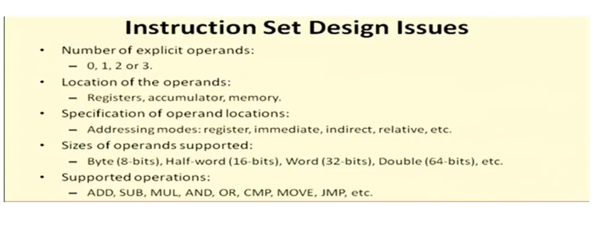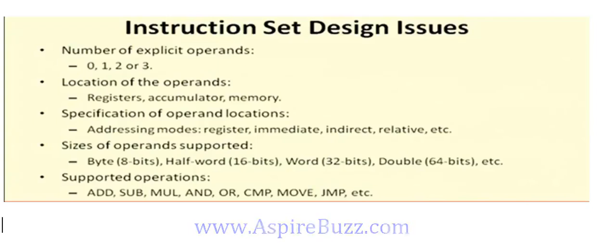The specification of the operand location includes addressing modes, which may be register, immediate, indirect, and relative addressing modes. The next issue is the size of the operand supported in the instruction, which may be a byte, half-word, word, and double word.